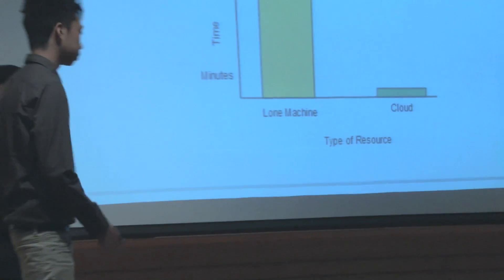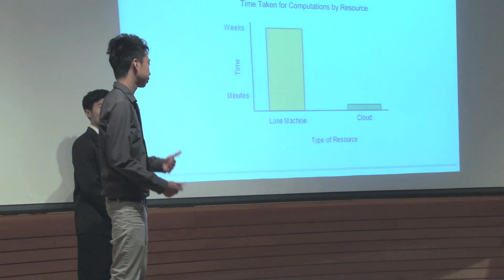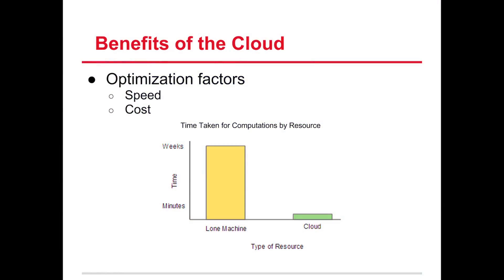So again, we are using the cloud, but why are we using the cloud? This is because of the benefits that the cloud provides. This is specifically the optimization factors of the two categories of speed and cost. As this graphic shows, when we compute the Navier-Stokes equation, one lone machine on the left over here would take approximately a couple days, maybe even a week, to calculate all the equations at once. But instead, a cloud would take approximately maybe four to seven minutes. This effectively reduces time and increases speed. This would reduce time by about 1,800 times, effectively increasing speed by a great amount.